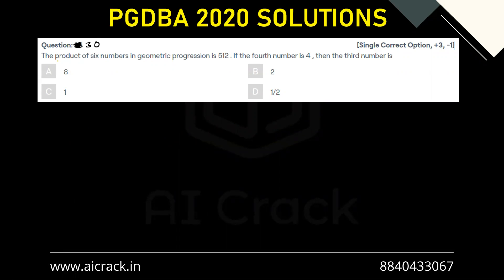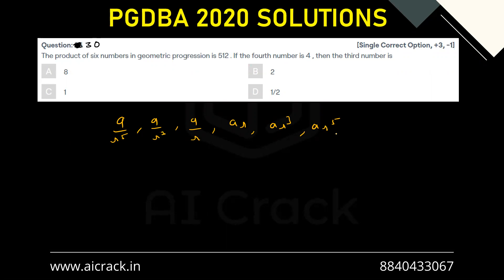Let's solve question number 30. The product of six numbers in geometric progression is 512. If the fourth number is 4, then what is the third number? In such a case, we consider the numbers as a/r⁵, a/r³, a/r, ar, ar³, ar⁵. We studied this in the property of consideration of numbers in case of geometric progressions.